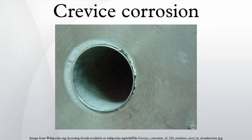To function as a corrosion site, a crevice has to be of sufficient width to permit entry of the corrodent, but narrow enough to ensure that the corrodent remains stagnant. Accordingly, crevice corrosion usually occurs in gaps a few micrometers wide, and is not found in grooves or slots in which circulation of the corrodent is possible.